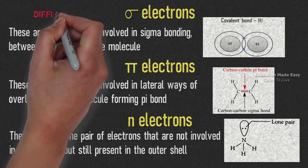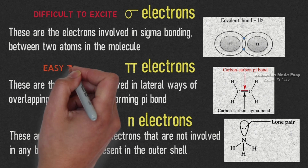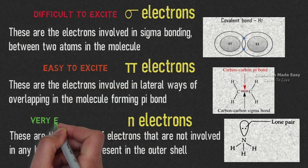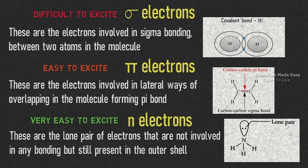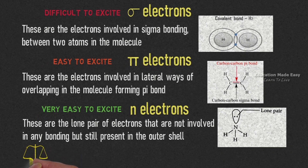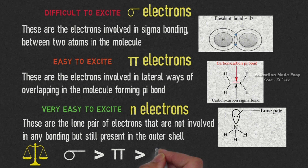Sigma electrons are difficult to excite whereas pi electrons are easy to excite and n electrons are very easy to excite. If we compare the energy required for exciting these electrons, we can understand that the energy required for sigma is greater than pi, which is greater than n.